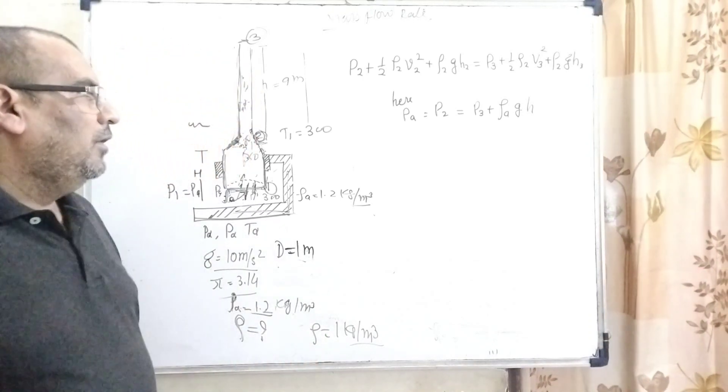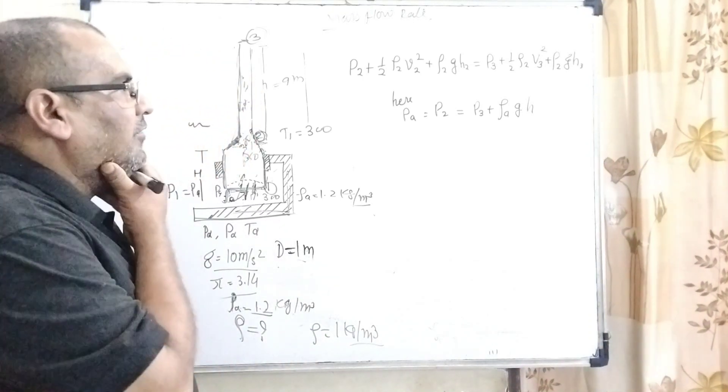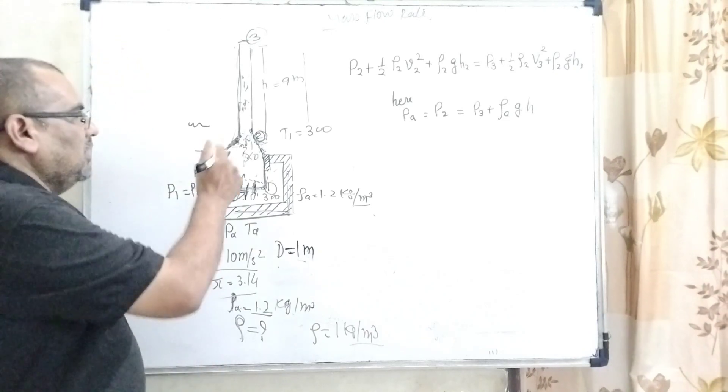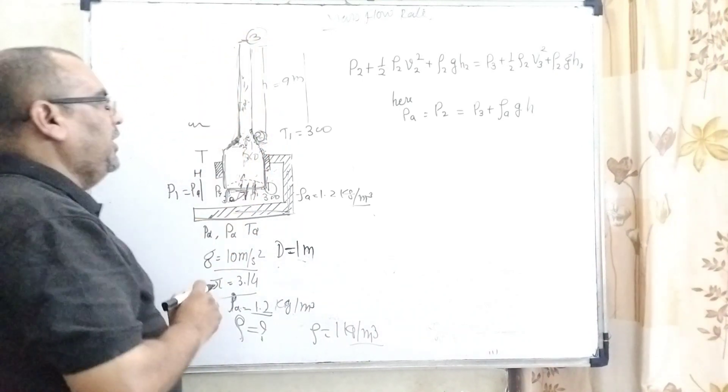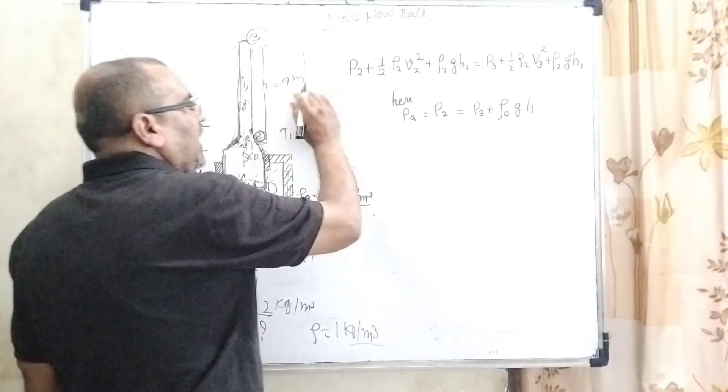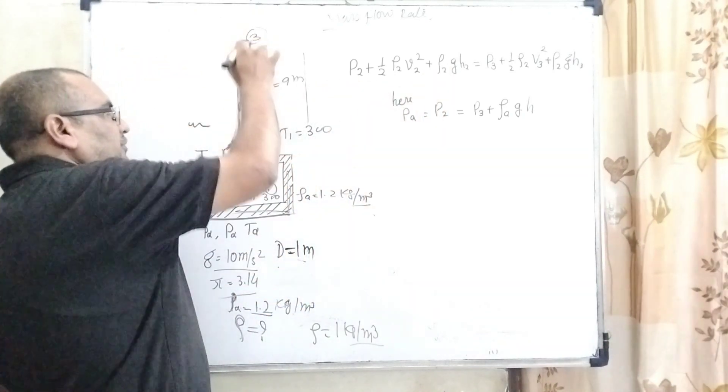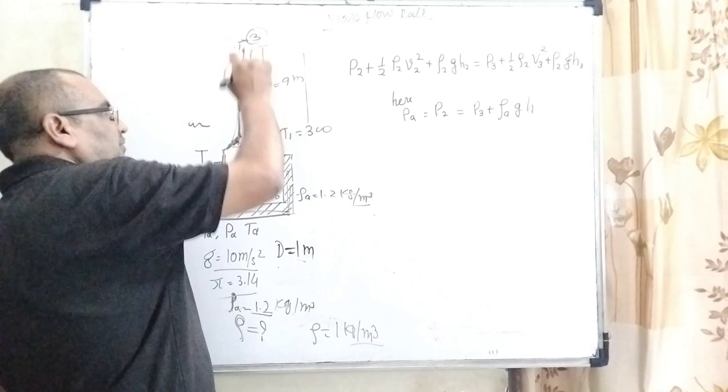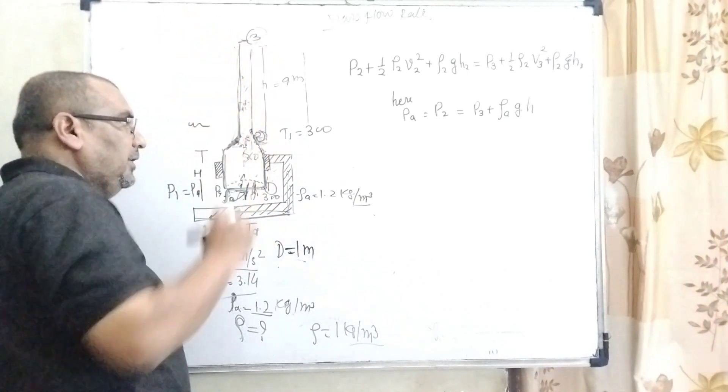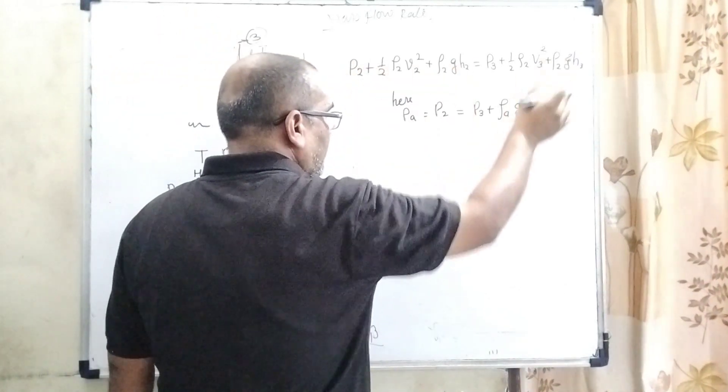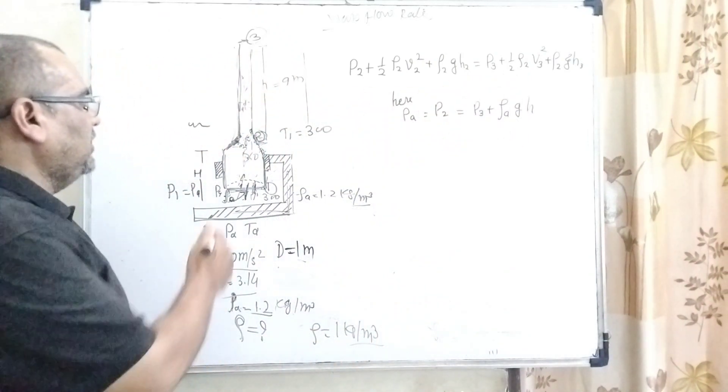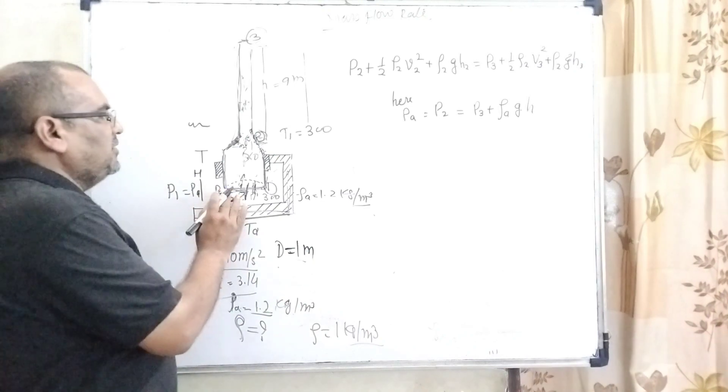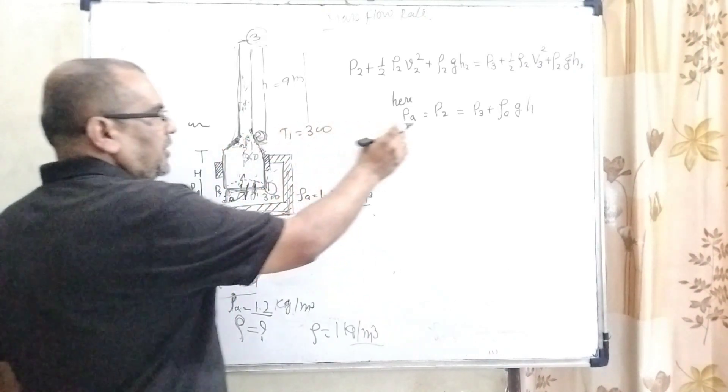Now we have to use the enhanced form of Bernoulli's theorem from point 2 to point 3. Here we use all energy passing through the gas from point 2 to point 3: pressure energy, kinetic energy, and potential energy should be constant everywhere.